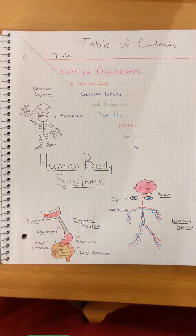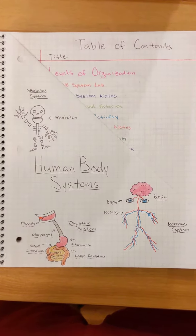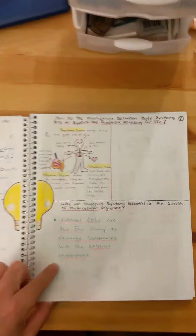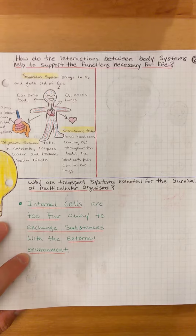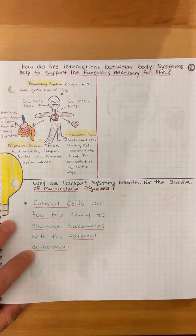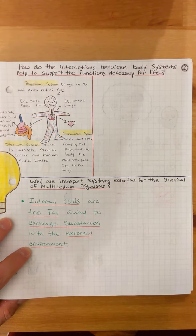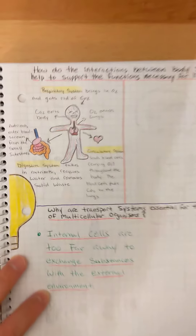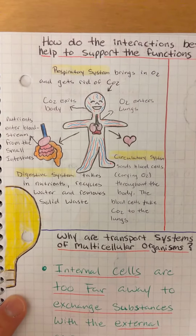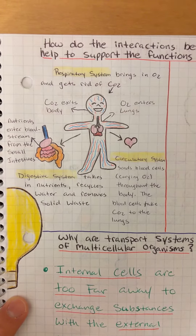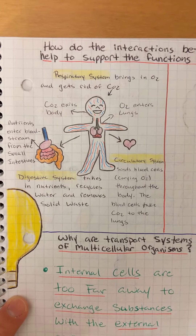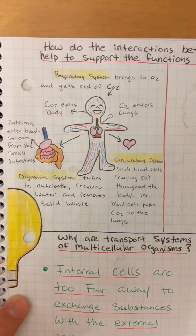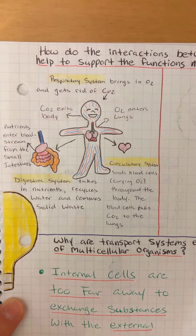As of the end of today, I have to first start off by going all the way back to our Big Idea page for unit number one. The top question on page number two says, how do the interactions between body systems help to support the functions necessary for life? So here I included a little image of how the respiratory system, digestive system, and circulatory system all work together to support life.